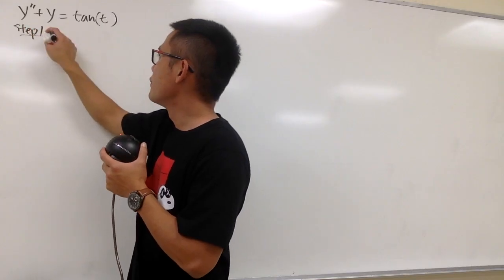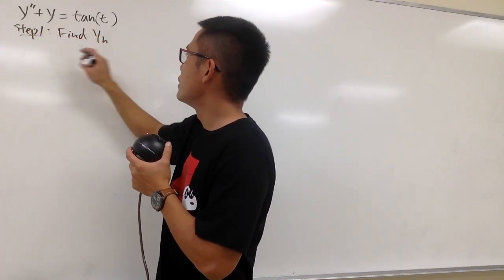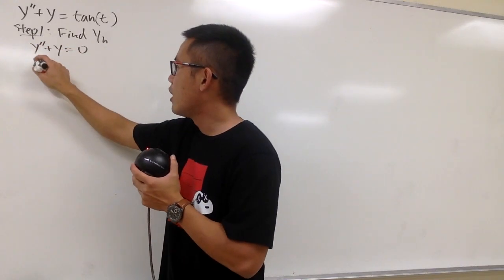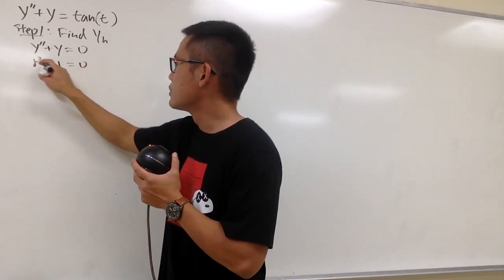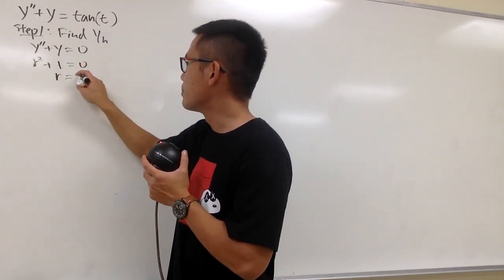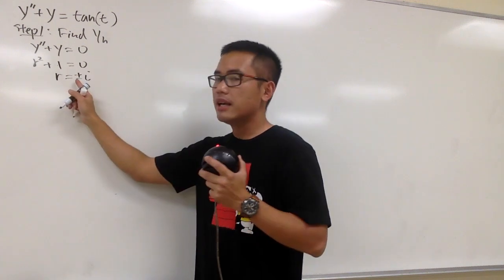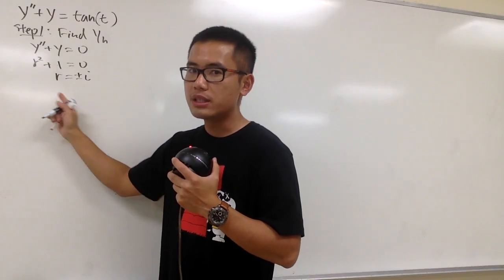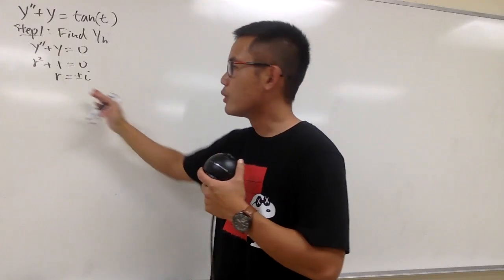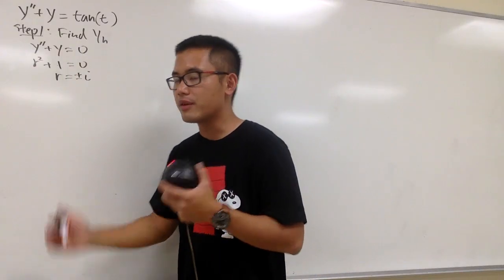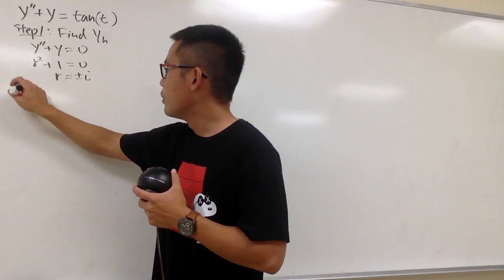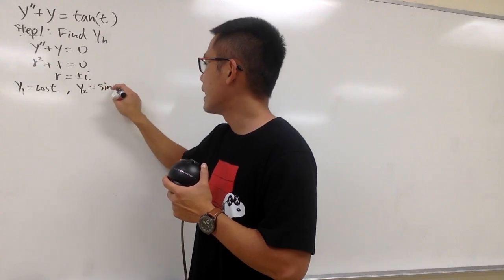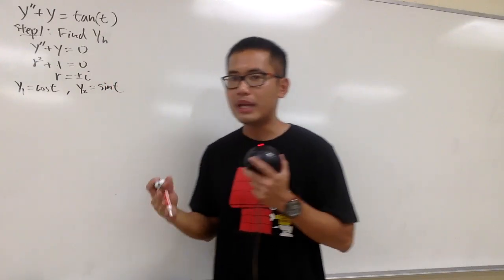Step 1: we have to find yh, meaning we have to solve y double prime plus y equals zero. We can change this to r squared plus 1 equals zero, so r equals plus or minus i, which is 0 plus or minus 1i. The first solution is cosine t and the other is sine t — there's no real part, so there's no e to the power term. Let y1 equal cosine t and y2 equal sine t.